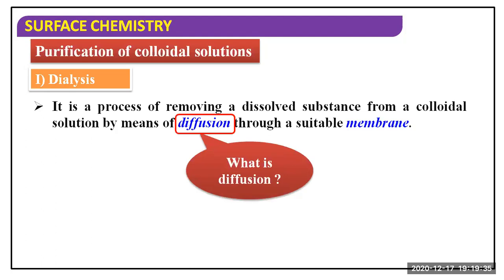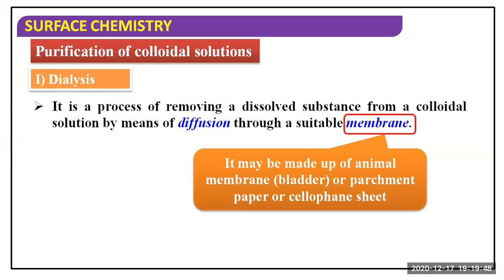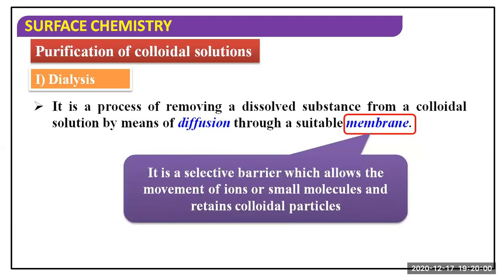What is diffusion? From higher concentration to lower concentration, when molecules are dispersed, it is known as diffusion. And what is a membrane? It may be made up of an animal membrane, like bladder or parchment paper or a simple sheet. It is a selective barrier which allows the movement of ions and small molecules and retains the main colloidal particles. So impurities may be removed by this membrane.